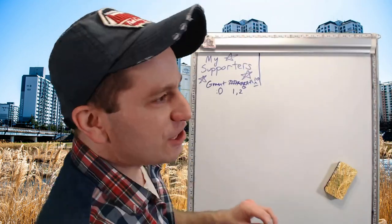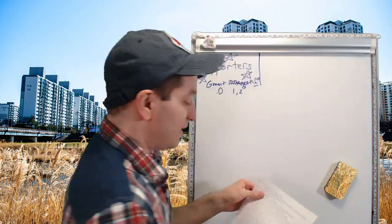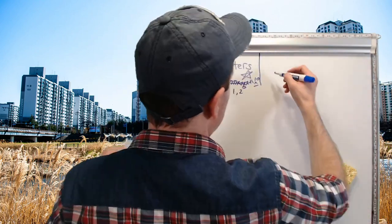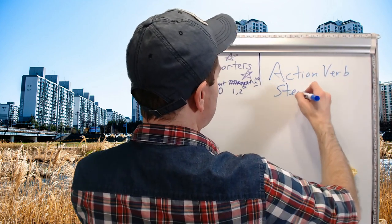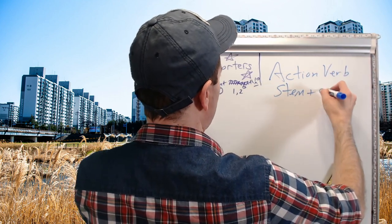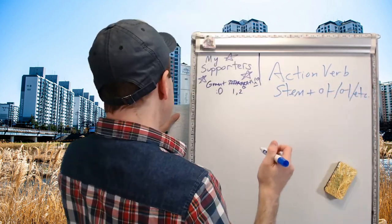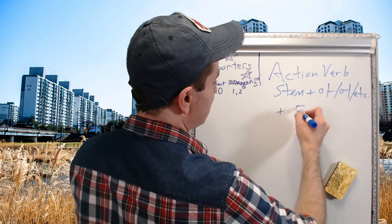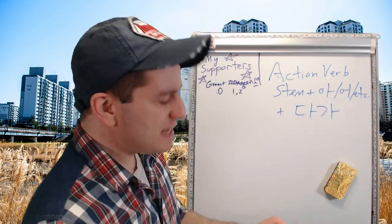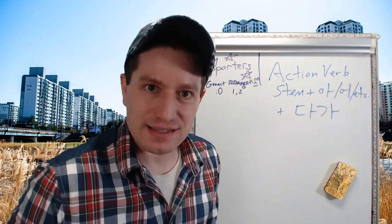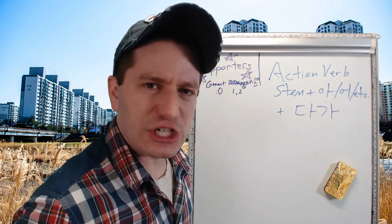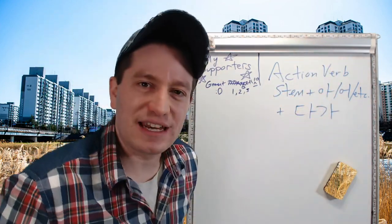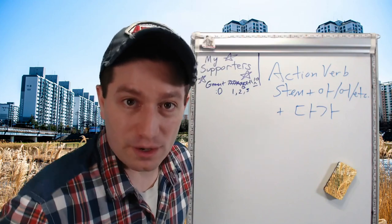We're actually going to be covering two forms today. The first form: you take an action verb stem and conjugate it as if you're going to conjugate the 아/어 form, and then you attach 다가. This is conjugated as-is — it will never be a past tense conjugation. If you see this conjugated a different way, it's not this form.